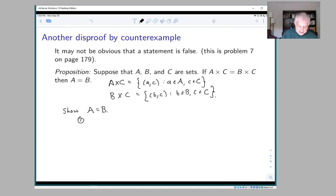show that A is a subset of B. For this, choose a in A and pick c in C